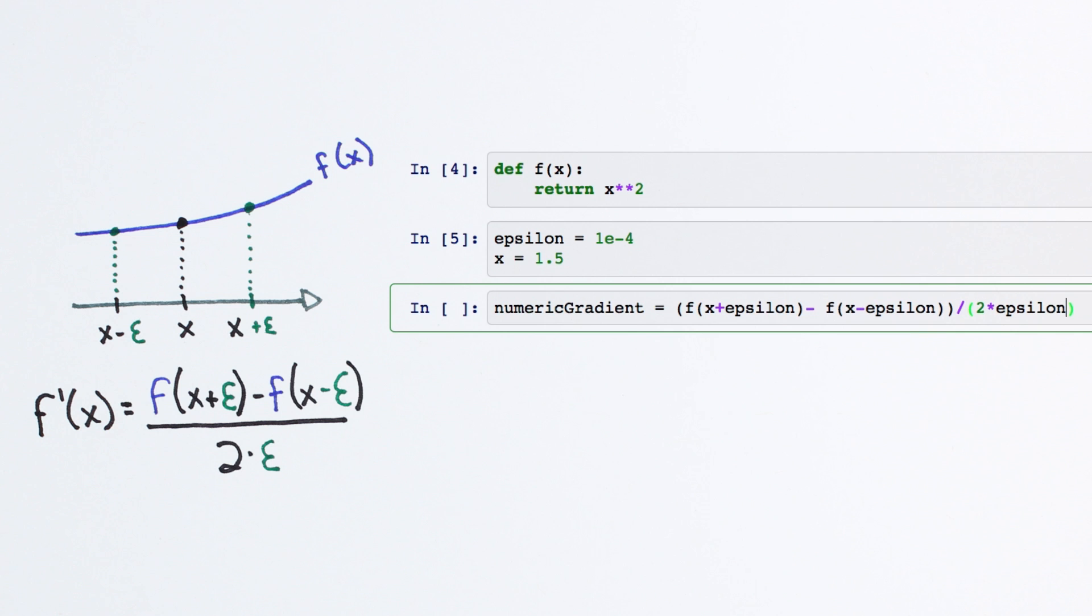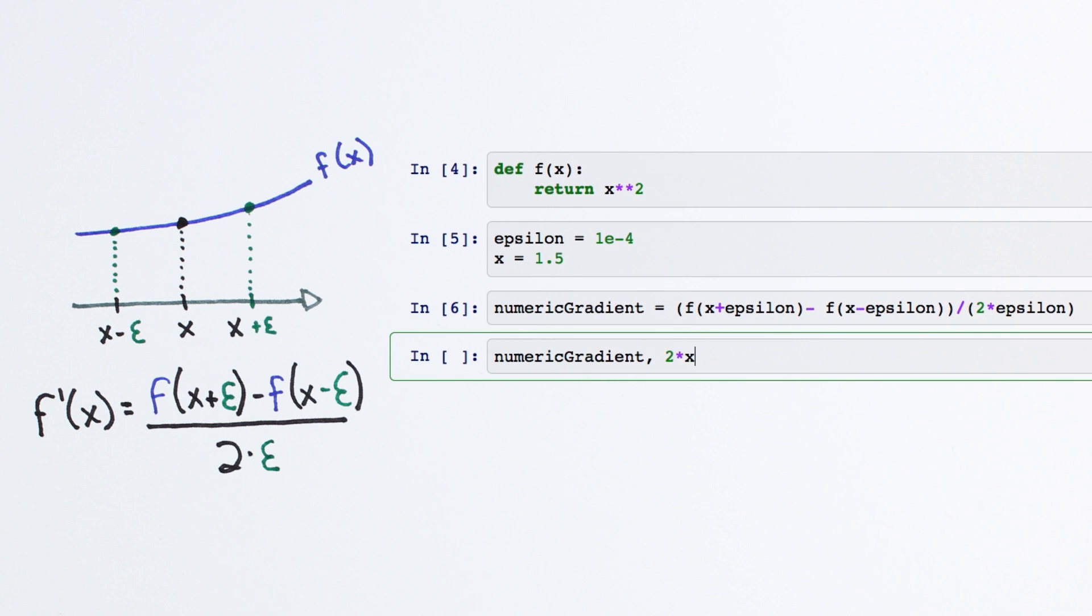We can then compare our result to our symbolic derivative 2x at the test point. If the numbers match, we're in business.